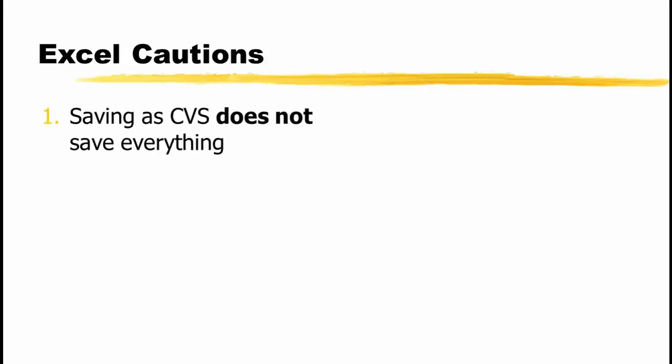The first is that saving an Excel file as a CSV file does not save everything. Anything that cannot be saved as part of a text file is discarded. That means the saved file does not contain any calculations you include in the worksheet, any text formatting you used, or any worksheet formatting you might have used. Specifically, all of the calculations are converted to the resulting answers and all formatting is simply discarded.